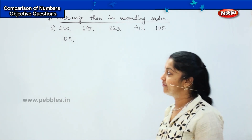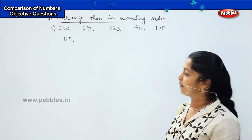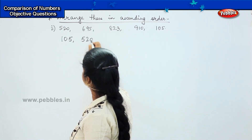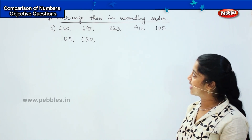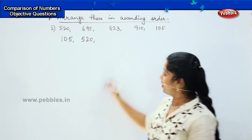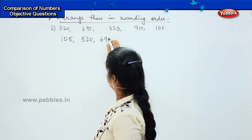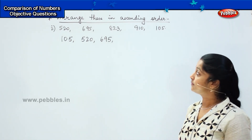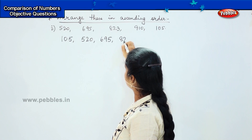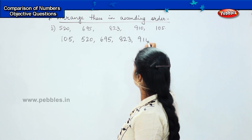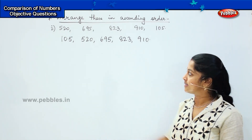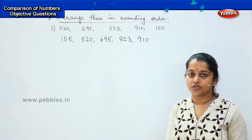What will come after 105? It is 520. After 520, what is the next number? 695. Then 823, and the last is 910. So have we arranged it in ascending order? Yes, this is how it is arranged in ascending order.